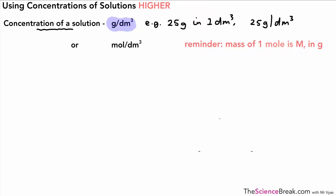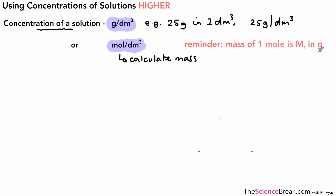We can also describe concentration in another way: in moles per decimetre cubed. Once we know moles per decimetre cubed, we can also do calculations involving mass — we could calculate masses as well. Just as a reminder, the mass of one mole of a substance is its formula mass in grams.